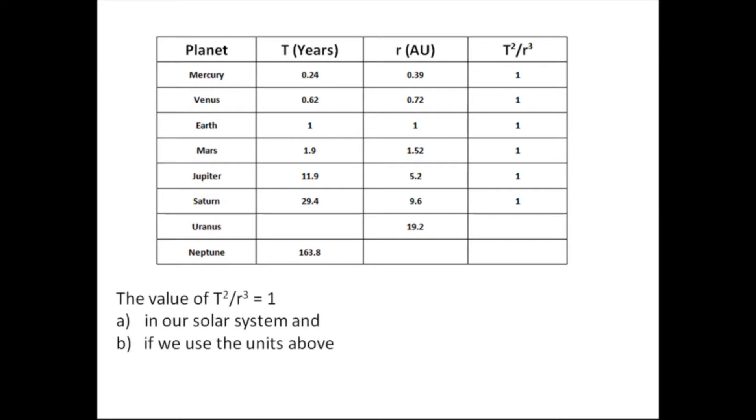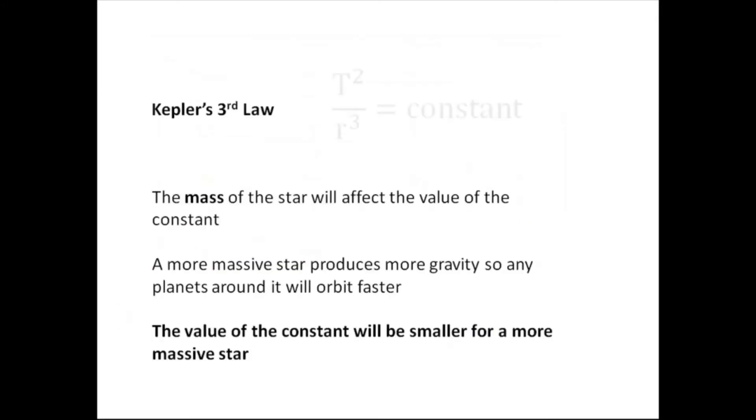Now, a few notes. t squared over r cubed equals 1. That only applies to our solar system and only if we use the units of Earth years and astronomical units. So, t squared over r cubed equals 1 in our solar system for objects going around the sun. In general, for any solar system, t squared over r cubed equals a constant. And the constant may not necessarily be 1. It could have lots of different values. But for any solar system, or for moons going around a planet as well, t squared over r cubed equals a constant.